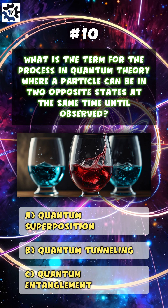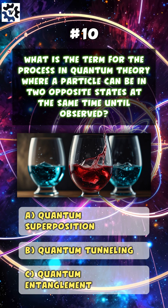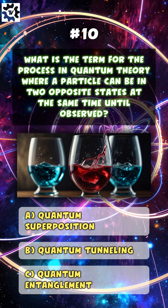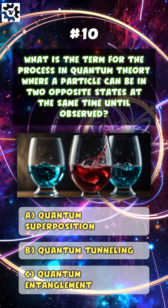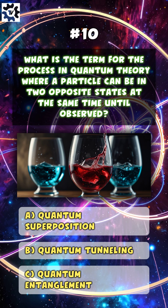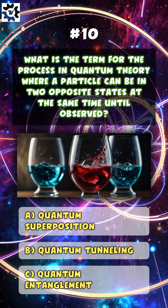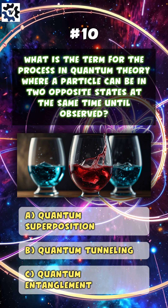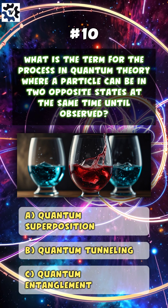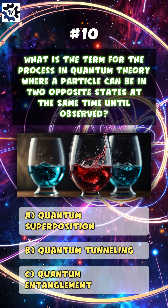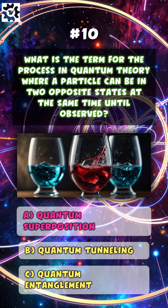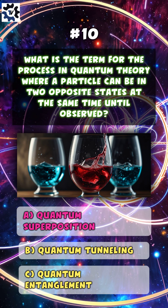What is the term for the process in quantum theory where a particle can be in two opposite states at the same time until observed? The answer is A: Quantum Superposition.